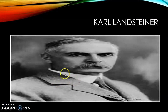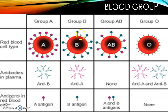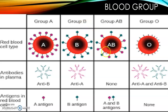Karl Landsteiner is the person who received the Nobel Prize for the discovery of the blood group system. We follow the ABO blood group system and the Rh blood group system. Blood groups A, B, AB, and O are determined by antigens on the RBC cell surface. If a person has antigen A, they belong to group A; antigen B means group B; both antigens A and B means group AB; and no antigen means group O.